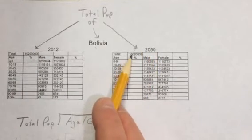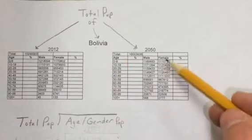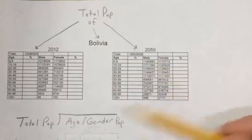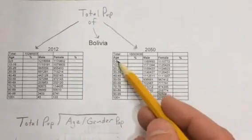It's projected that their total population will be this and their total female and male populations will be these based on age groups.